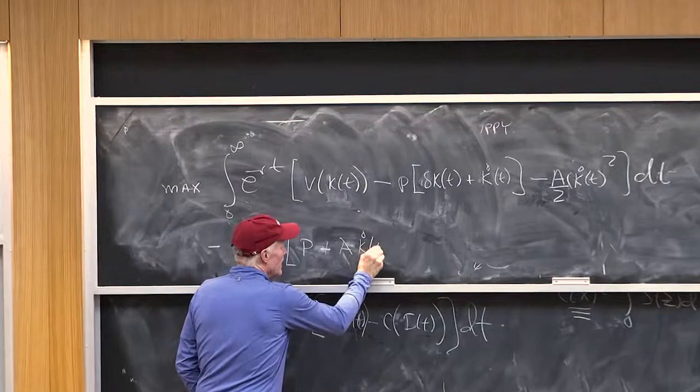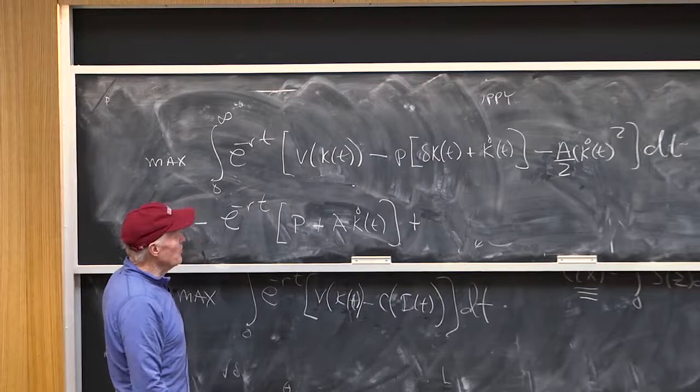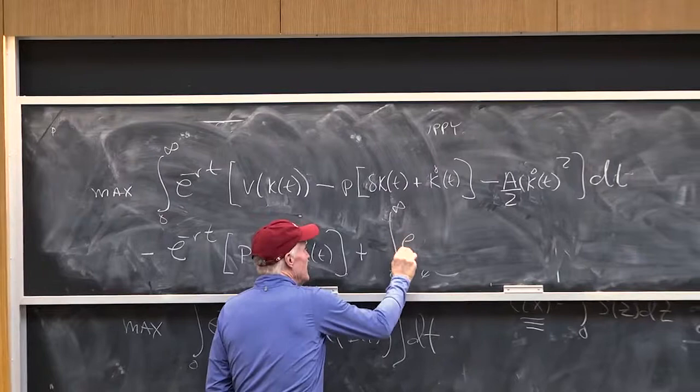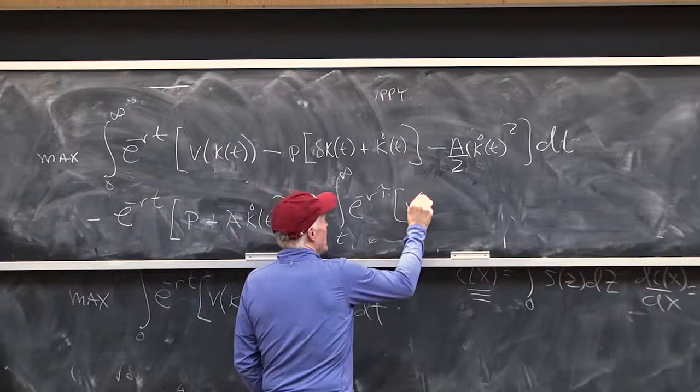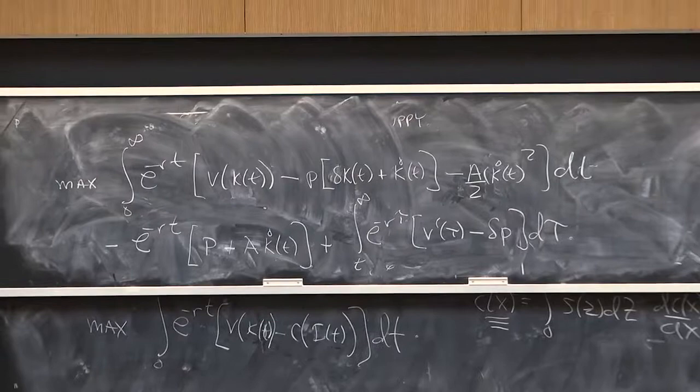That's the marginal cost of investment at date t, equals plus I'm going to get the integral of the future, which is the integral from t to infinity e to the minus r tau, v prime of tau minus delta p.